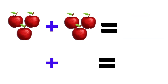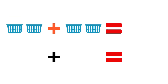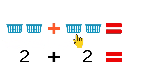Next, three apples plus three apples is equal to how many apples? Let's count: one, two, three, four, five, six. In total, six apples. Two baskets plus two baskets is equal to how many baskets? Let's count: one, two, three, four. In total, four baskets.